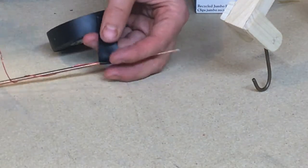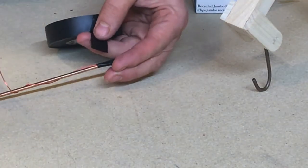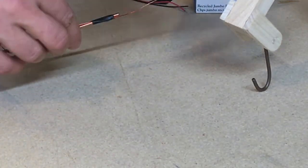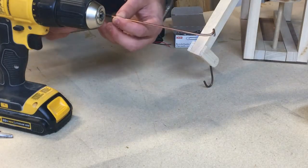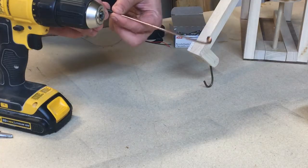Again, the more coils we make, the stronger the magnet, so I want to wrap my wire tightly and keep it neat to get as many wraps as I can. You can do this by hand, but I'm going to put the rod into a drill to help me wrap the wire.